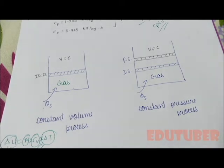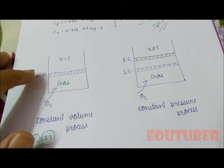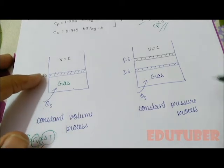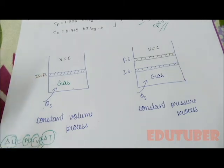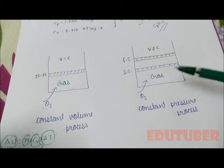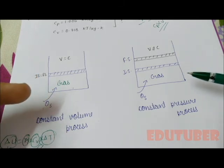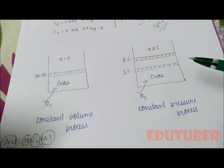Here we can say, in constant volume, heat supplied will only increase the temperature. But in constant pressure, heat supplied has to increase the temperature and also do the external work. So for increasing one degree Celsius, heat required in constant pressure process is more compared to heat required in constant volume process.